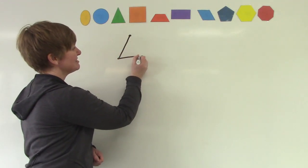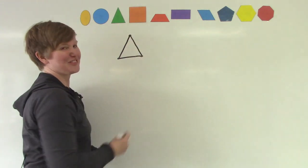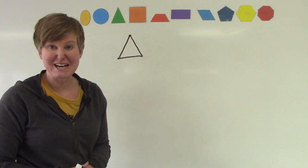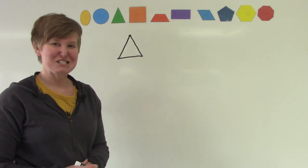One, two, three sides. Our three-sided shape is called what? That's right. It's a triangle.